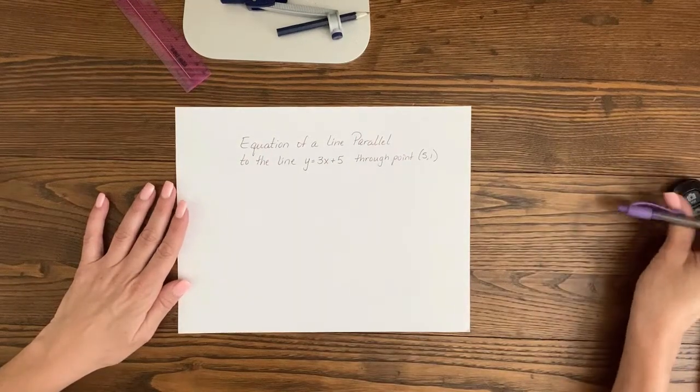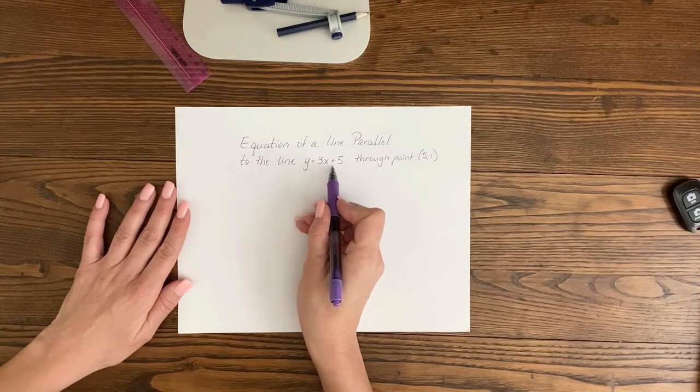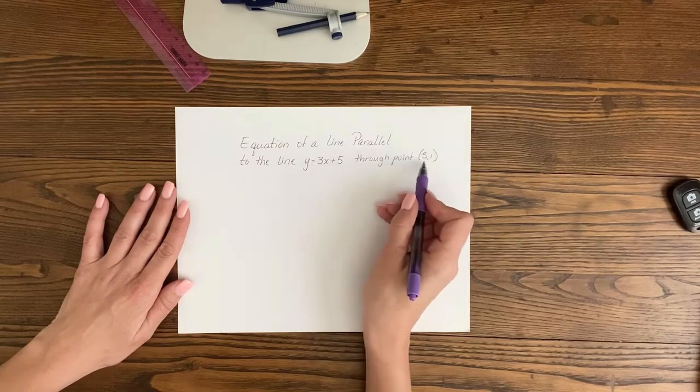Okay, we are going to create an equation of a line parallel to the line y equals 3x plus 5 through point (5, 1).